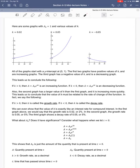We can even show that this value of k is exactly like an interest rate for compound interest. So, when we have this k equals 0.02, we can actually say that's a growth rate of 2%.